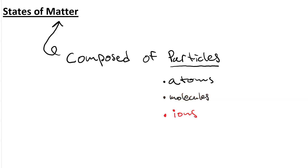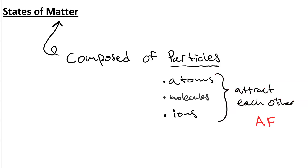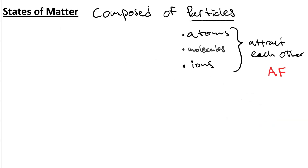All of these particles have something in common, and that is that the particles attract each other. The stronger the attractive force is, the more they stick together. We're going to refer to those attractive forces as AF. So AF makes these molecules want to stick to each other — you've seen this: if you have a piece of metal, the metal atoms are stuck together and it's very hard to rip it in half. You can do it with aluminum foil, but that's because it's very thin. So attractive forces make these particles stick to each other.